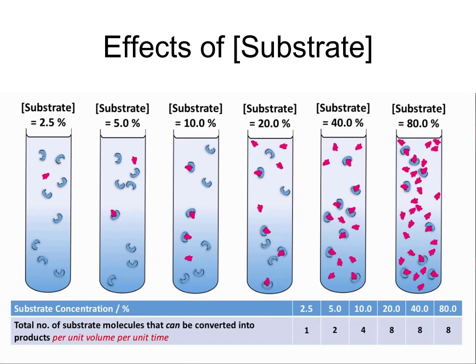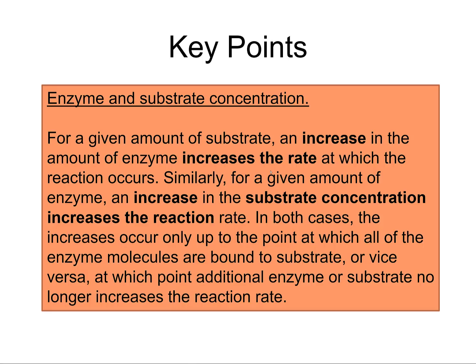If I only had one enzyme and a whole bunch of substrate, it would complete it all — it would just take a long time, because enzymes are reusable. The key points: for a given amount of substrate, increasing the amount of enzyme increases the rate. The more enzyme you add, the more you can process. Similarly, for a given amount of enzyme, an increase in substrate concentration increases the reaction rate. In both cases, increasing occurs up to the point where all enzyme molecules are bound to a substrate, or vice versa.